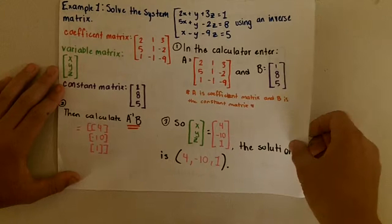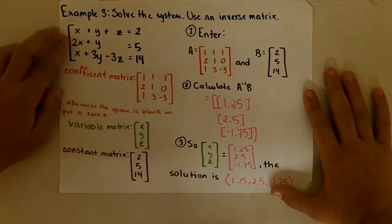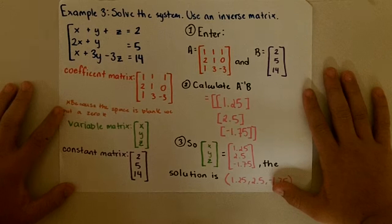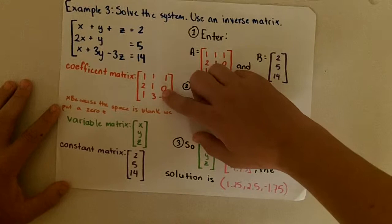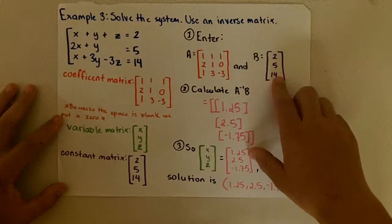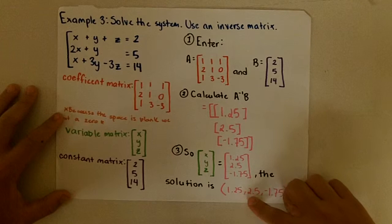Example 2: solve x plus y plus z equals 2; 2x plus y equals 5; x plus 3y minus 3z equals 14 using an inverse matrix. When a term is missing, plug in 0 for it in the coefficient matrix. Enter the coefficient matrix as A, and the constant matrix B as (2, 5, 14), then calculate A⁻¹B. The result is x equals 1.25, y equals 2.5, and z equals negative 1.75.